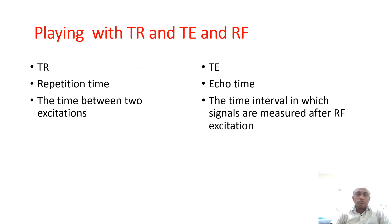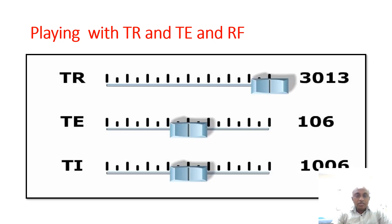So how are sequences of images generated? By playing with TR and TE and RF. TR is the repetition time — the time between two excitations. TE is the echo time — the time interval in which signals are measured after RF excitation. You can play with TR and TE to generate many sequences as per your need.